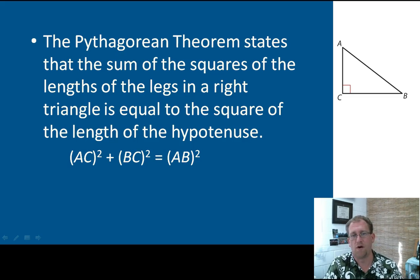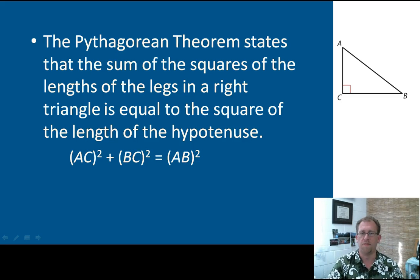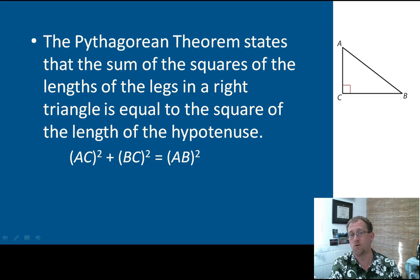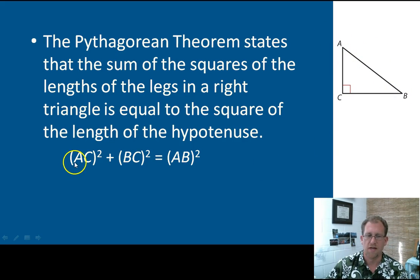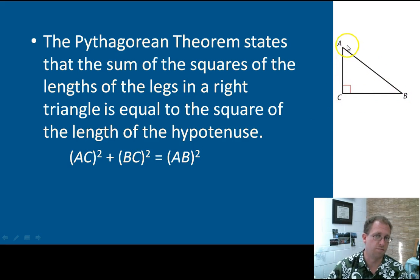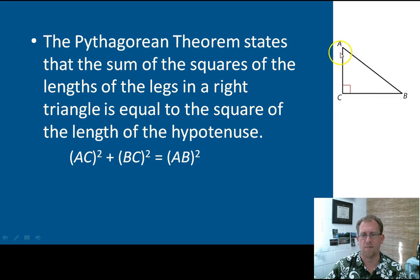You have already seen the Pythagorean theorem before in math — this is not news to you — but we are going to apply it quite a bit in geometry. The Pythagorean theorem states that the sum of the squares of the legs of a right triangle is equal to the square of the hypotenuse. So leg AC squared plus leg BC squared equals hypotenuse AB squared. You'll also sometimes see it written as A squared plus B squared equals C squared. You'll see it both ways.